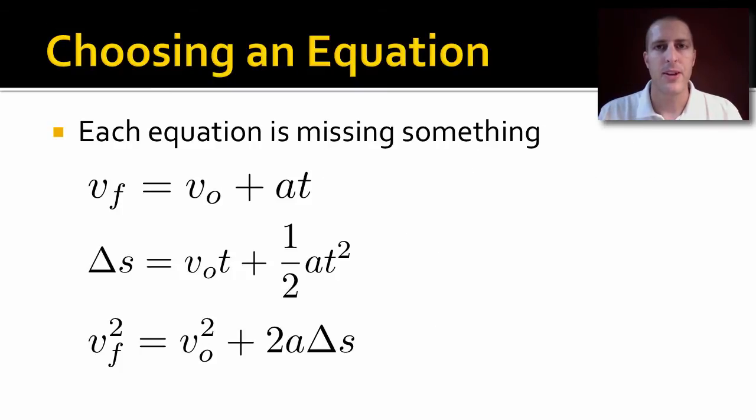Now, as far as choosing amongst the amigos, when you have a problem, you write down your givens, you look and see what you have and what you don't. Each one of these equations is missing something. So the first amigo, there's no delta S variable in there. So if you don't have displacement, and I'm not asking about displacement, then you should use that equation.